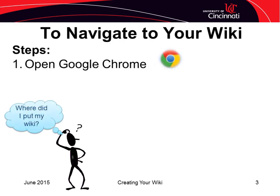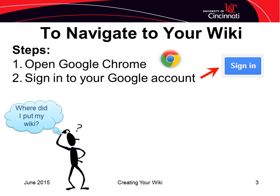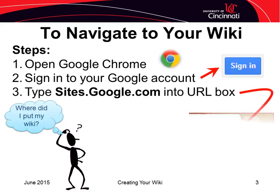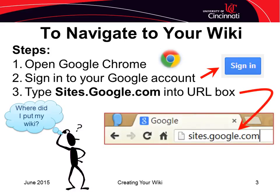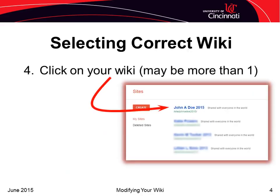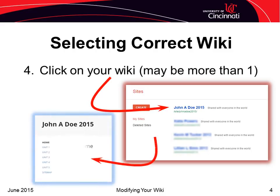Do you remember where your wiki is? That's pretty important since you've expended some effort to create it. If you don't remember where it is, here's an easy way to find it. First, open Google Chrome and make sure you're signed in to your Google account. Next, enter sites.google.com in the address box, then press the Enter key. You should now see a list of all the wikis that you have created or others have shared with you. Find your wiki and click on the name — this will take you to your wiki homepage.